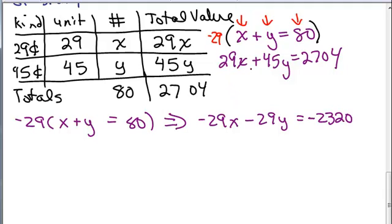And then I want to add this to this other equation, 29X plus 45Y equals 2704. So my question is, do you want to put that up on top of this or below it?